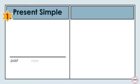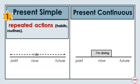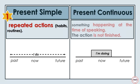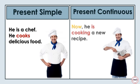Present Simple is used for repeated actions, habits, and routines. Present Continuous is used for something happening at the time of speaking. The action is not finished. He is a chef. He cooks delicious food. Now he is cooking a new recipe.